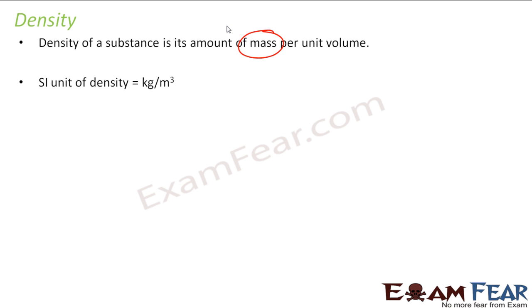Now, we will talk about density. Density of a substance, as we all know, is mass per unit volume. Since I am telling it is mass per unit volume, for mass SI unit is kg and for volume, the SI unit is meter cube. So the SI unit of density will be kg per meter cube. Please note, it will be kg per meter cube because the SI unit of mass is kg and the SI unit of volume is meter cube.